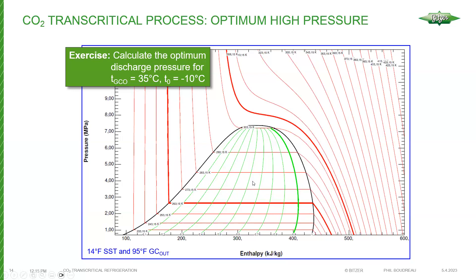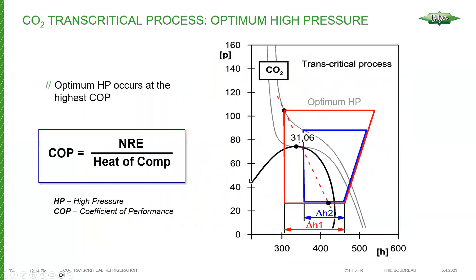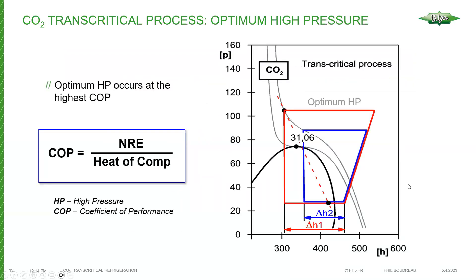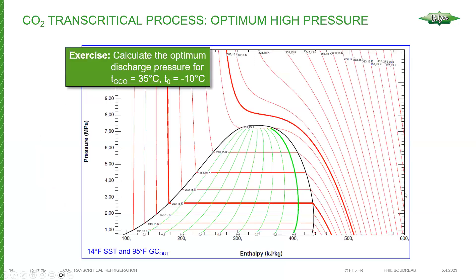Note that the optimum pressure is not necessarily the point where you get optimum capacity. You can actually sacrifice COP for higher capacity — this could be done to facilitate a heat reclaim cycle, for example, or if a compressor is down and the system needs to be forced to get more capacity even at the expense of reduced efficiency.